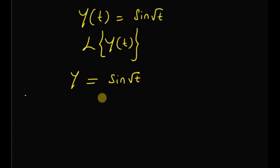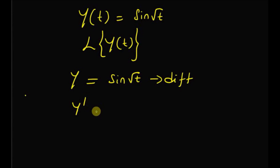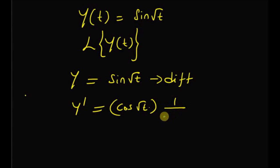Upon differentiation, we have y' = cos(√t) · (1 / (2√t)).